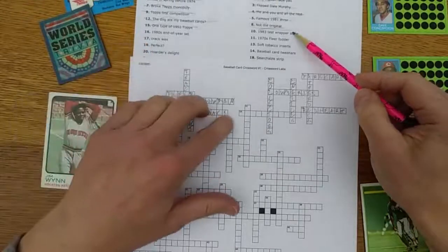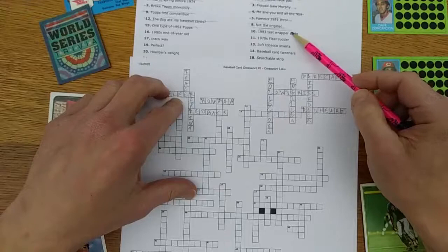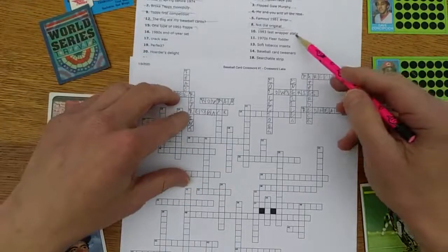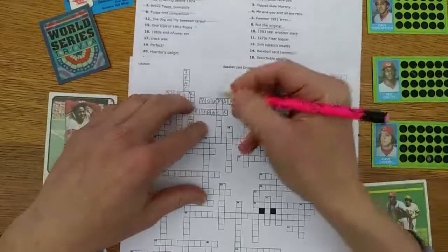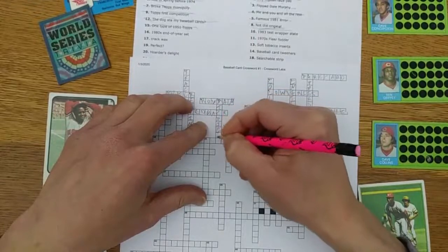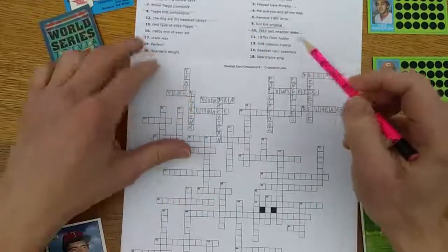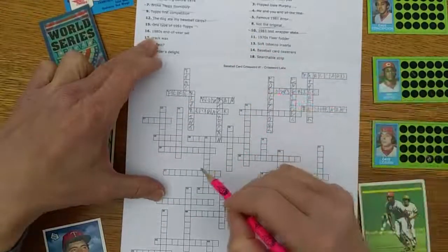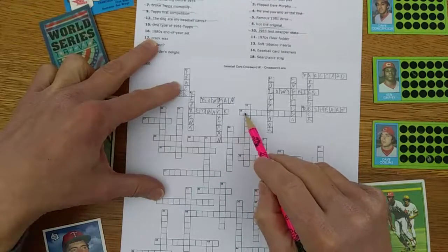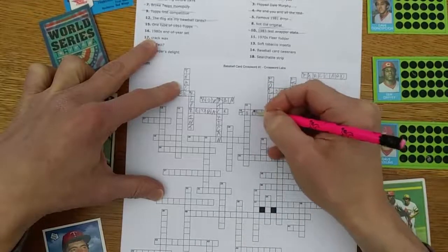1983 Test Wrapper State: In '83, Topps issued some of their cards in these kind of Mylar type plastic tamper proof wrappers, and that was issued supposedly at least in Michigan, although we had them here in my area in central Indiana as well. 1980s end of year set: We had Topps traded. Will that fit? T-O-P-P-S-T-R-A-D. Yep, Topps traded. Can't be a coincidence.